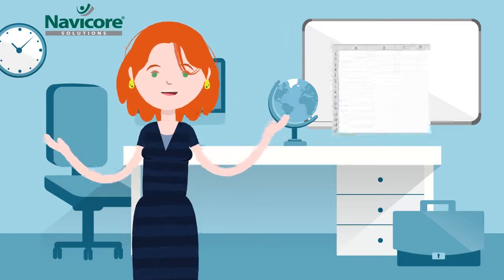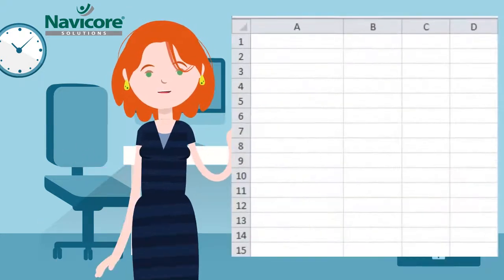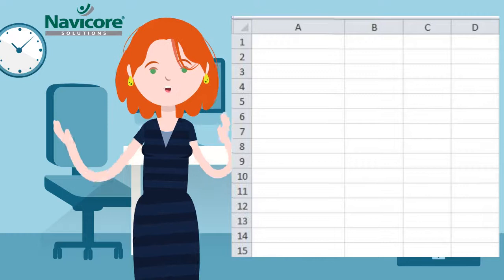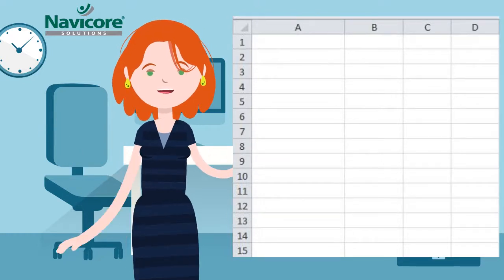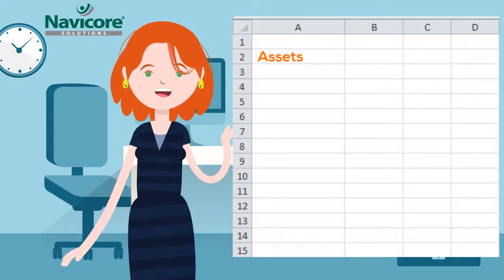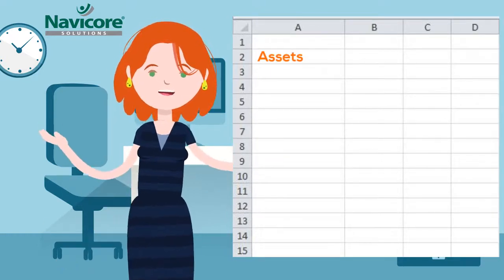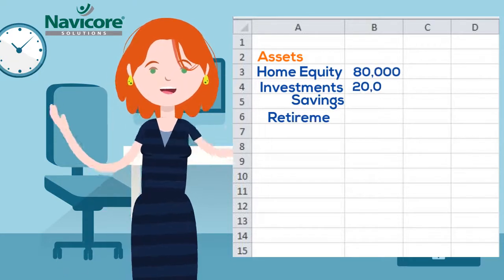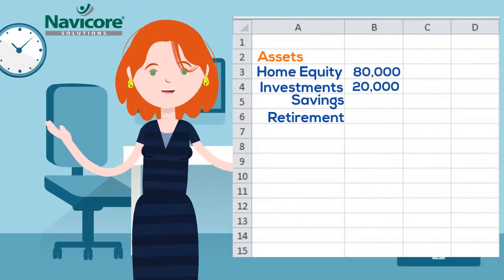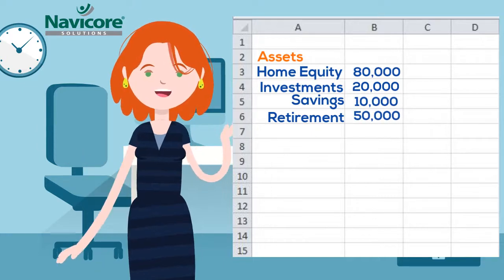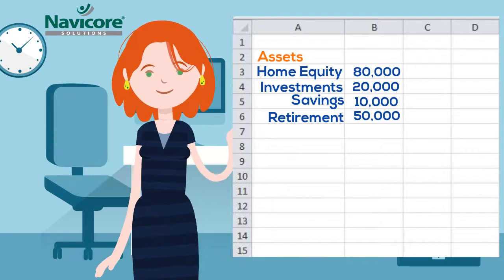The simplest way to calculate net worth is in an Excel spreadsheet. Simply start by listing your assets. These will include things like your home equity, investments in stocks and mutual funds, other real estate, your retirement fund. Include your savings, cash, and emergency fund too.